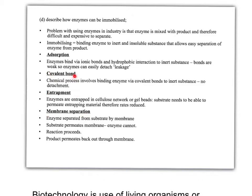Immobilizing is essentially attaching an enzyme to some form of inert substance. There are a number of ways in which this can be done. First, adsorption — notice adsorption, not absorption — which means attached to the surface of something. We can also bind it with covalent bonds. There is also entrapment, and membrane separation. These are the four ways you need to know how we can immobilize an enzyme — binding it to some inert and insoluble substance.